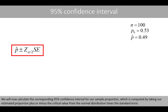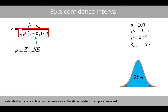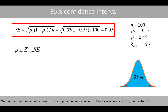We'll now calculate the corresponding 95% confidence interval for our sample proportion, computed by taking our estimated proportion plus or minus the critical value from the normal distribution times the standard error. As we have seen previously, the range between negative 1.96 and positive 1.96 covers 95% of the area in the standard normal distribution, so our critical value is 1.96. The standard error is calculated the same way as the denominator of our Z-test, and equals 0.05 based on the population proportion of 0.53 and sample size of 100.